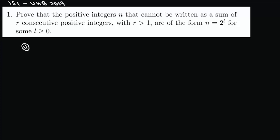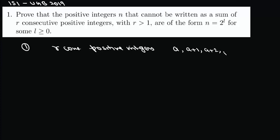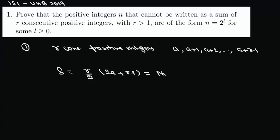Let us say we have r consecutive positive integers and the first term is a, so we have terms like a, a plus 1, a plus 2, up to a plus r minus 1. We can write this sum as r divided by 2 times 2a plus r minus 1, and this is equal to our number n.